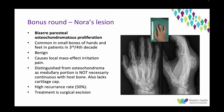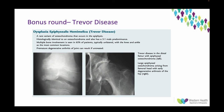A few things look similar to osteochondromas. Nora's lesion — bizarre parosteal osteochondromatous proliferation — is common in the small bones of the hands and feet in patients in their 30s and 40s. It's benign but has a high recurrence rate of 50%. It's distinguished from osteochondroma in that the medullary portion is not necessarily continuous with the host bone and it doesn't have a cartilage cap. Treatment is surgical excision; they usually have quite a bit of irritation and pain. Trevor disease — dysplasia epiphysealis hemimelica — is an osteochondroma of the epiphysis, and if not treated it can result in premature degenerative arthritis. It's very rare but worth being aware of.